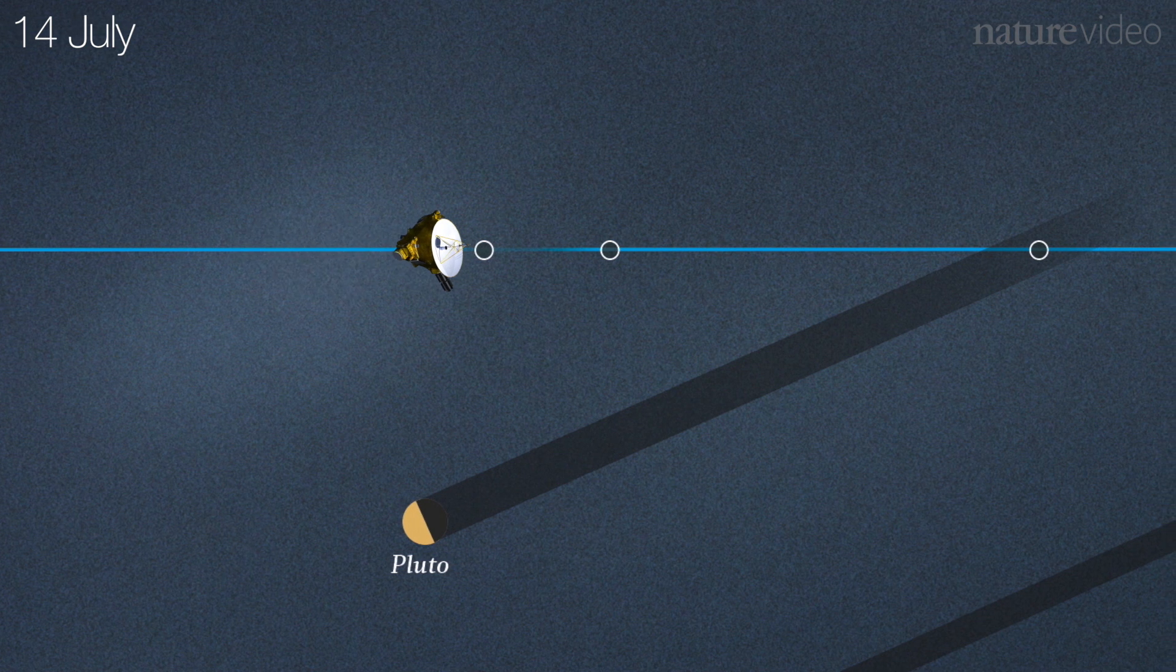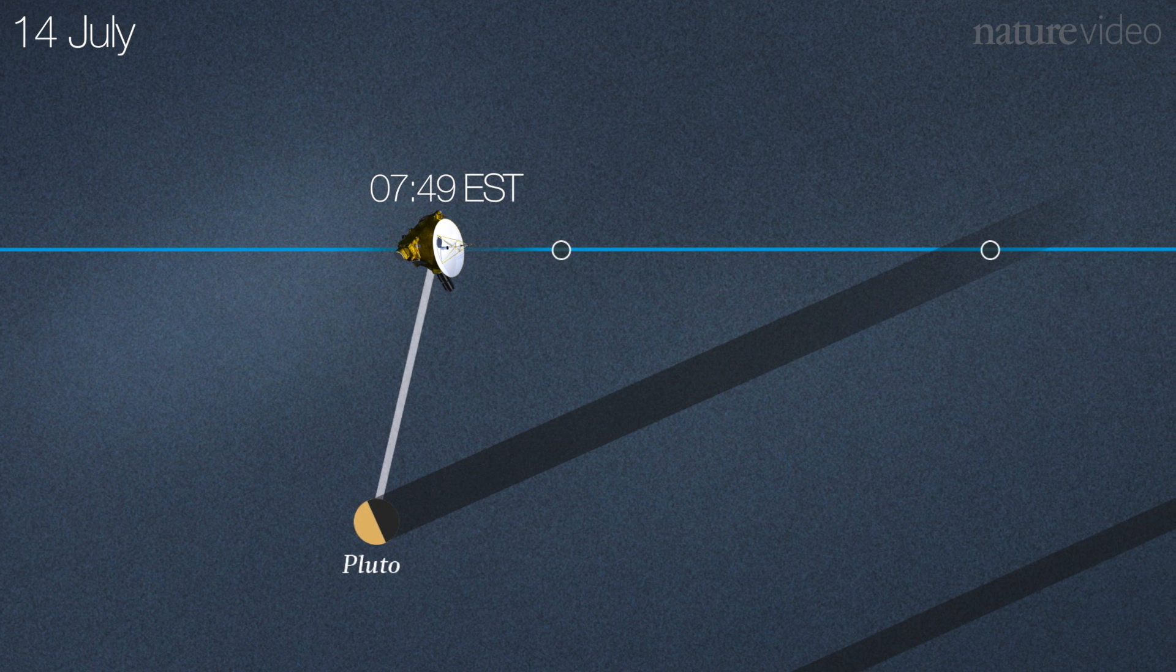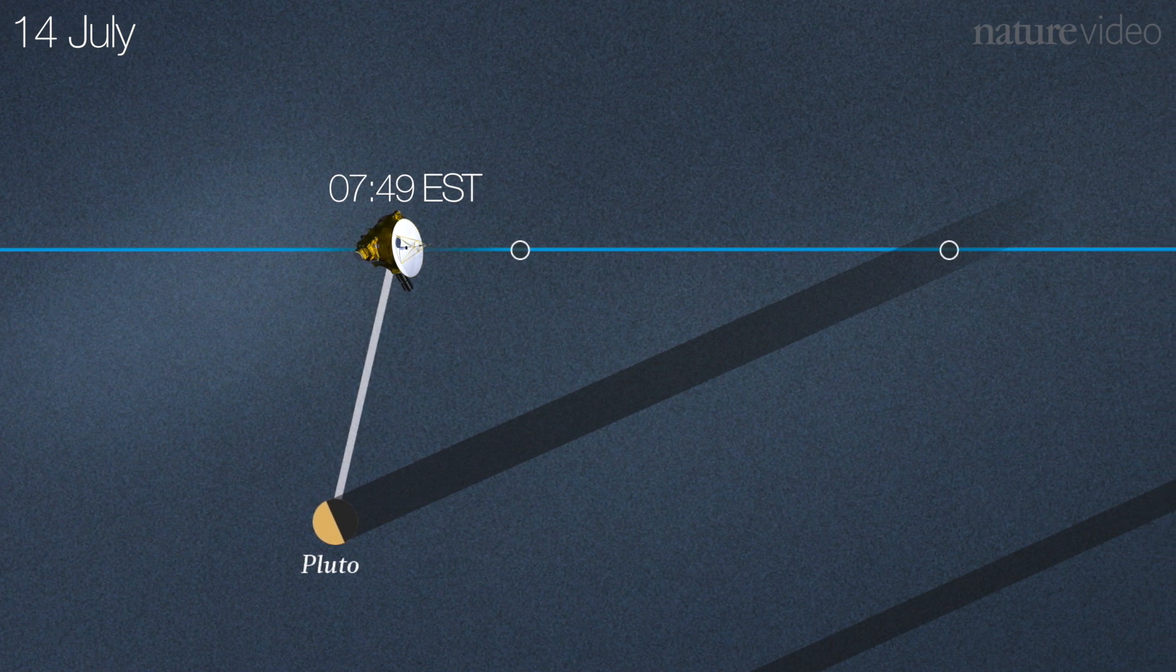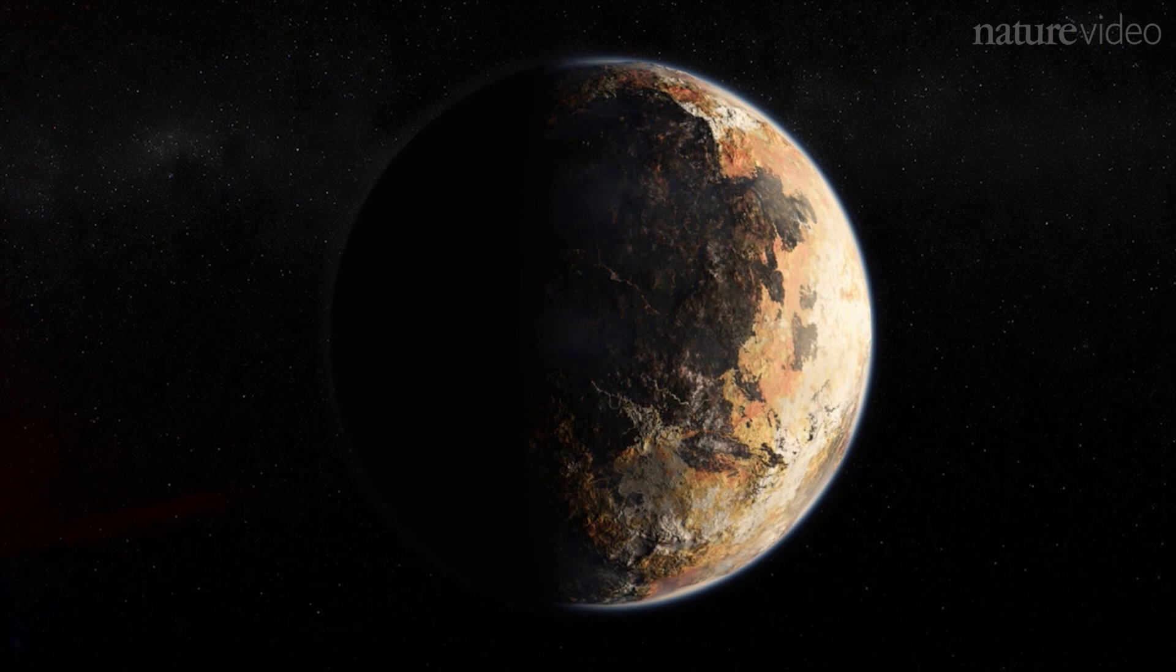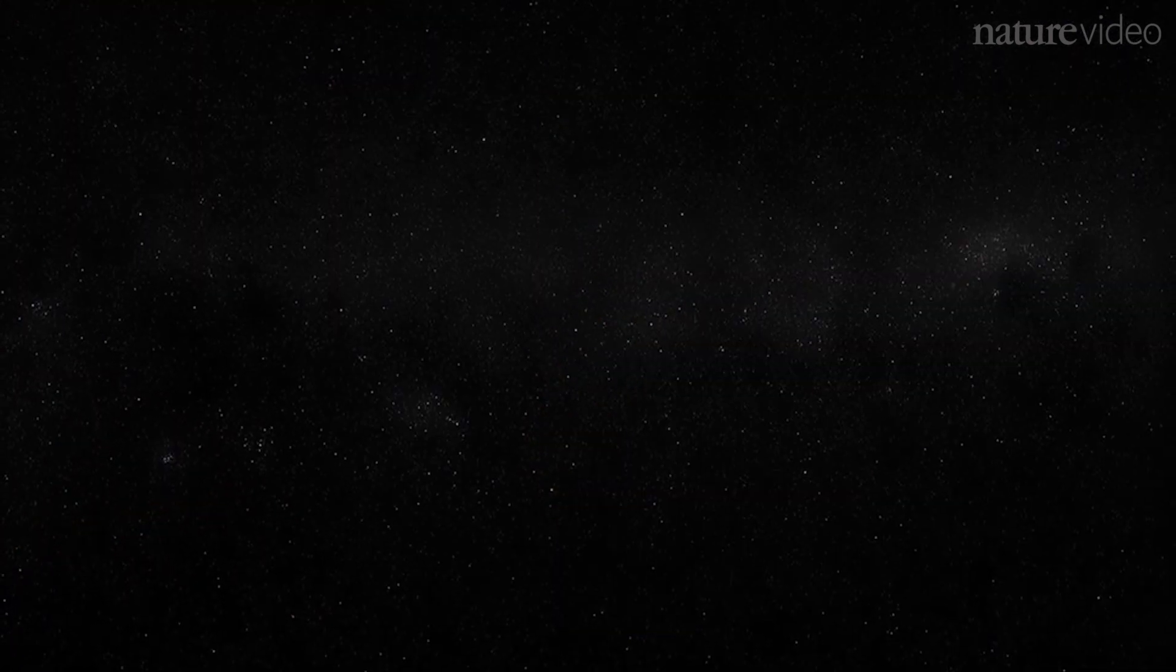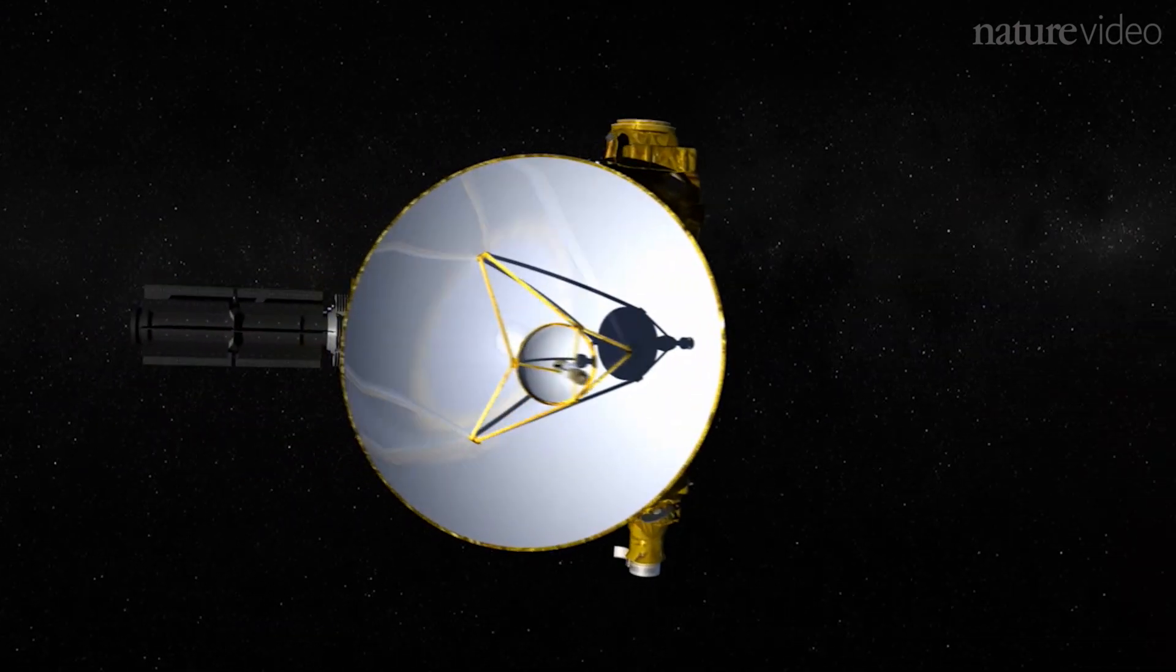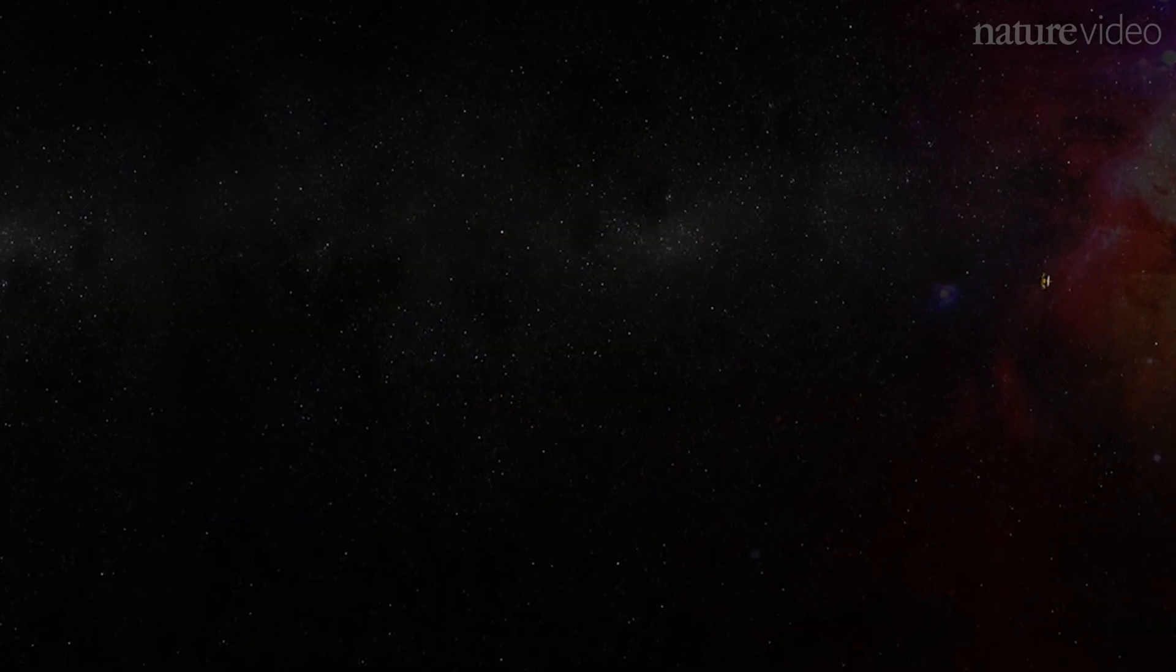At 7:49 a.m. on Tuesday, New Horizons will pass just 12,000 kilometers from Pluto, its closest approach and its best chance to take detailed photos and readings of Pluto's surface. But it has to work quickly, as the tiny probe will whiz by Pluto at almost 50,000 kilometers an hour.